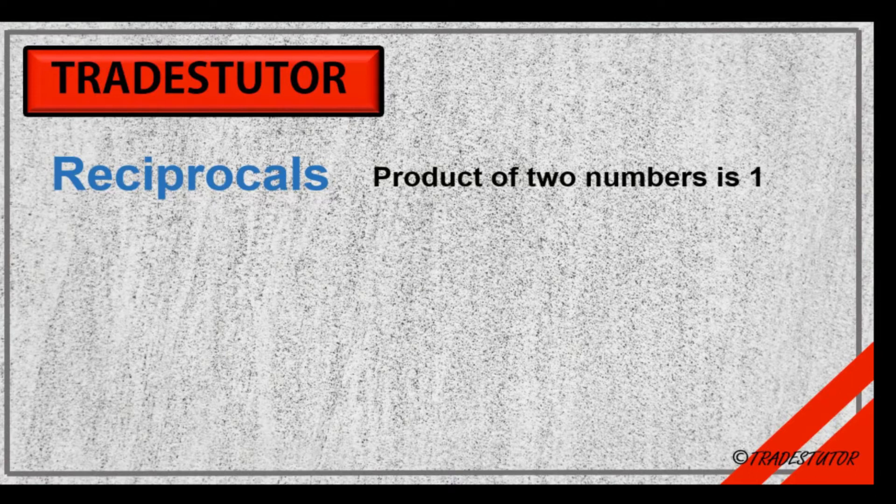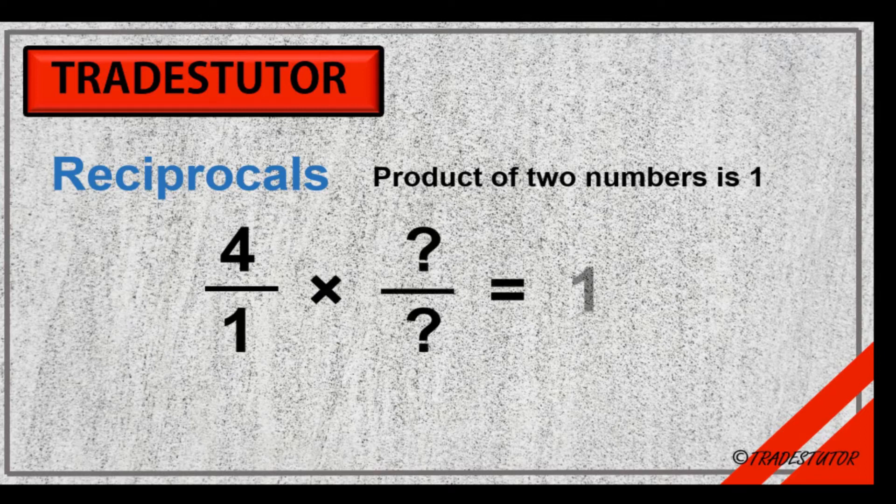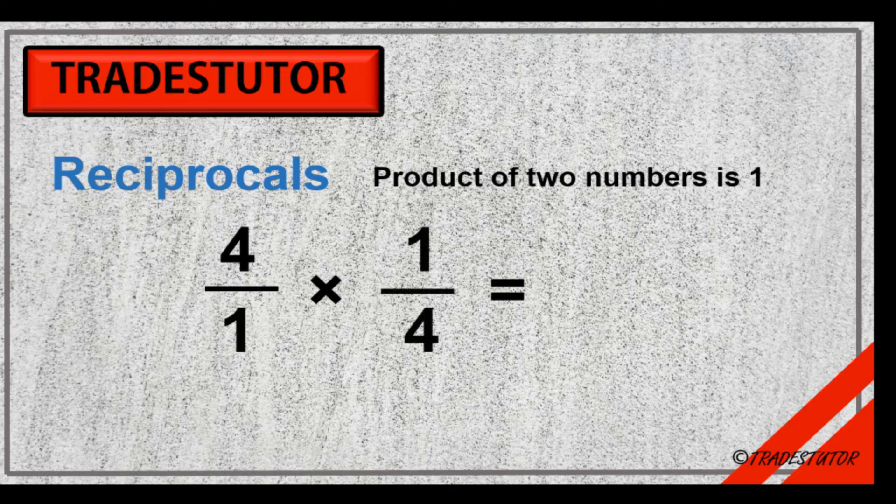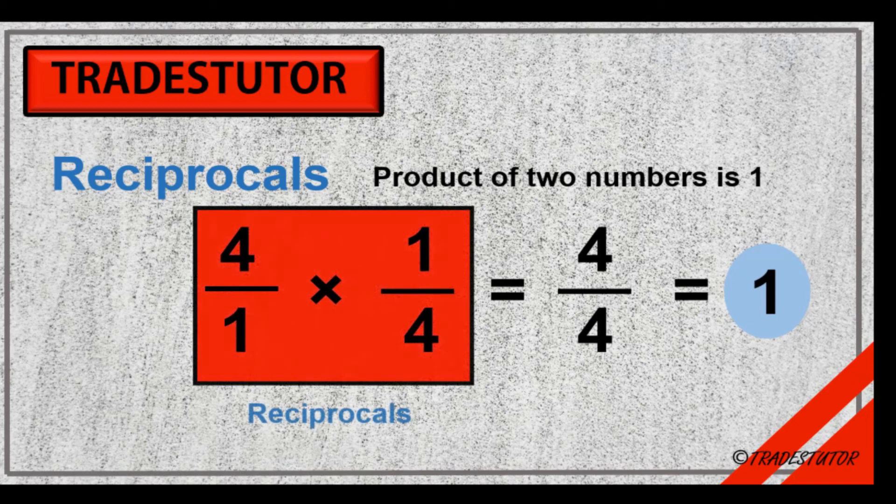So an example is if we take the number four, and we can make it so that it's four over one—that means the same thing—and we're going to multiply it by something, its reciprocal, to end up with one. And what is that number? Well, if we multiplied it by one over four, there you go, we get four over four, which is equal to one. So in the end of the day, four over one and one over four are termed reciprocals.